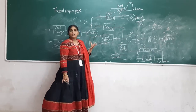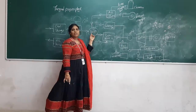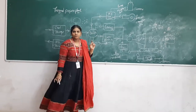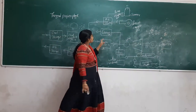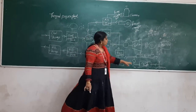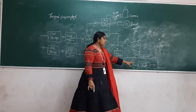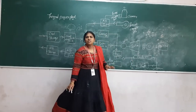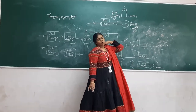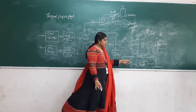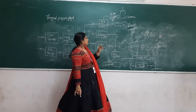In the boiler, water is pumped through the tubes. Where does the water come from? From the river. There is a water treatment plant where the dust particles present in the river water are filtered out and treated. Then the water is fed to the feed water system, and then it goes to the economizer.